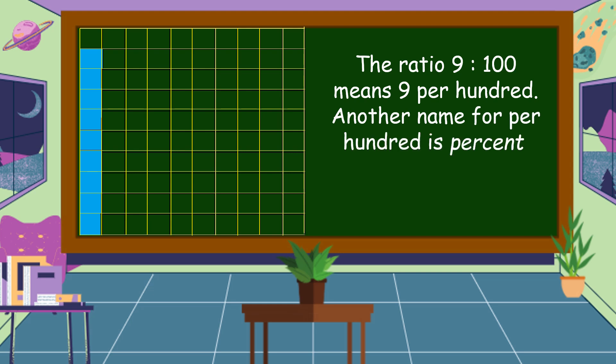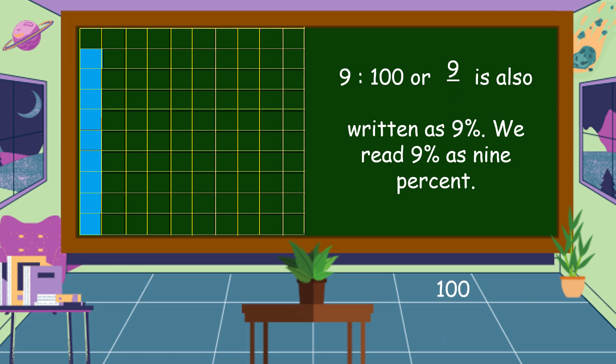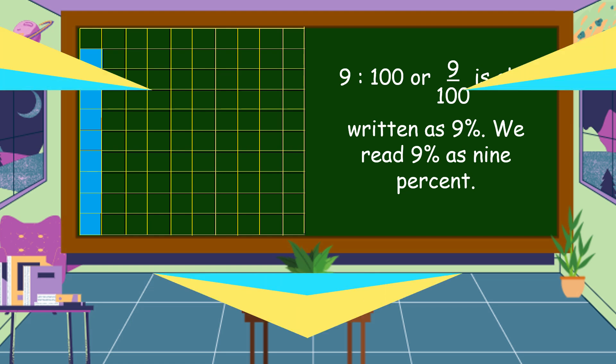Another name for per 100 is percent. This is the symbol for percent. 9 is to 100 or 9 per 100 is also written as 9 and the percent sign. We read this as 9 percent.